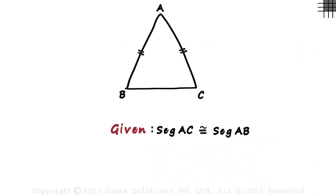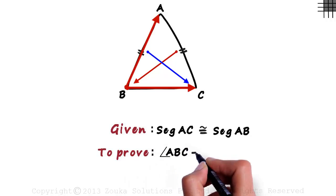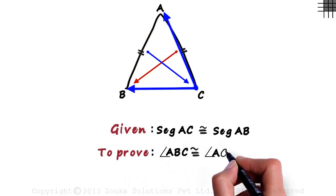The next thing we have to note down is what we have been asked to prove. We have to prove that the angles opposite the equal sides in a triangle are congruent. That is we need to prove that angle ABC is congruent to angle ACB.